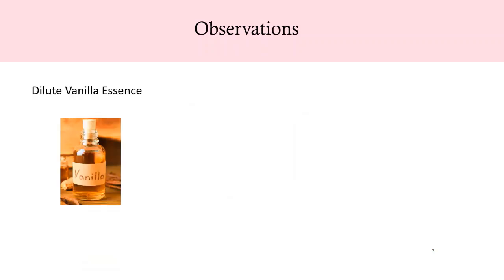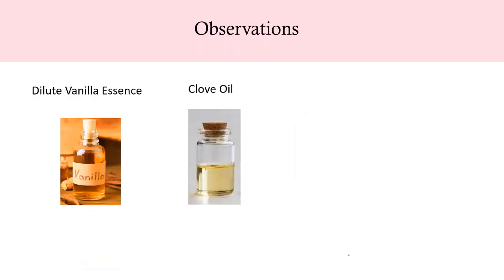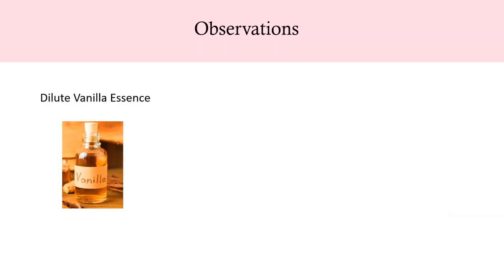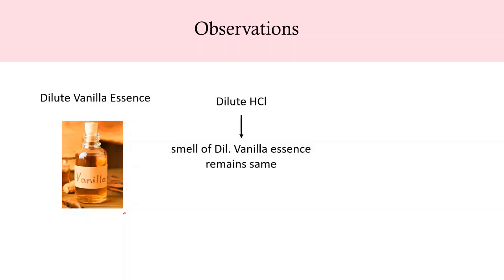Next we take the other two olfactory indicators — dilute vanilla essence and clove oil — and also take dilute hydrochloric acid in one test tube and dilute sodium hydroxide in another. Now add a few drops of dilute vanilla essence to dilute hydrochloric acid and shake the test tube. We observe the smell of dilute vanilla essence remains the same, and we conclude that its smell remains the same in acidic medium.